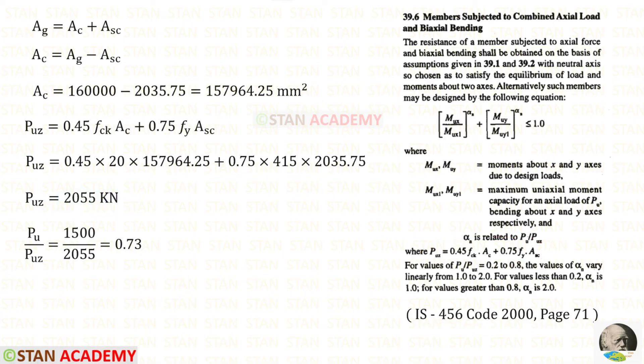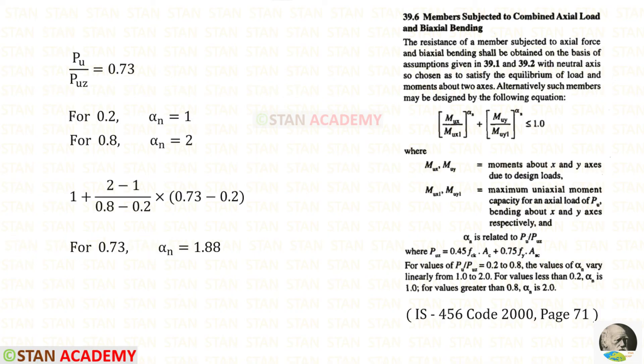Let us find PU upon PUZ. For that we will get 0.73. For PU upon PUZ, we have got 0.73. For that we have to find alpha n. When PU upon PUZ is 0.2, alpha n can be taken as 1. When PU upon PUZ is 0.8, alpha n can be taken as 2.